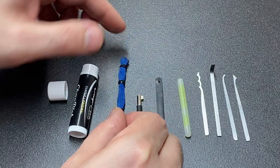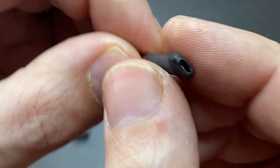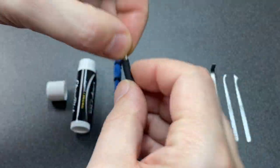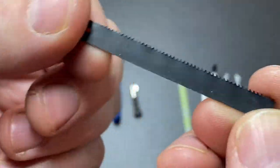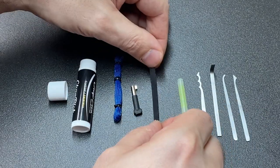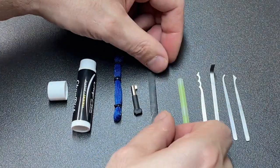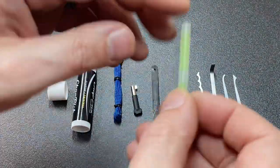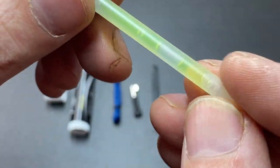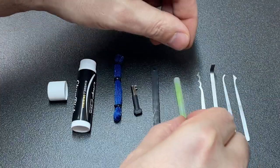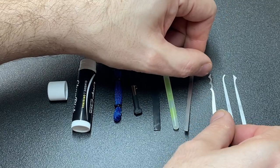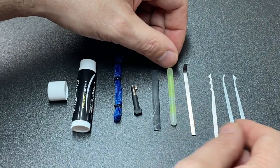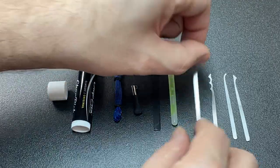What else do we have? A handcuff key with a little shrink tube to make it more comfortable, a bit of saw blade for cutting cable ties or anything you need, a glow stick, and three lock picks: a triple peak, half diamond, flat top short hook, and a turning tool as well.